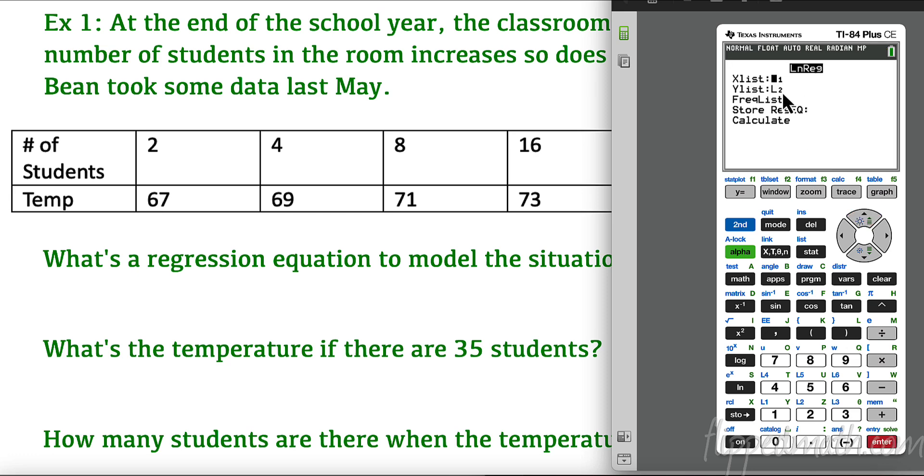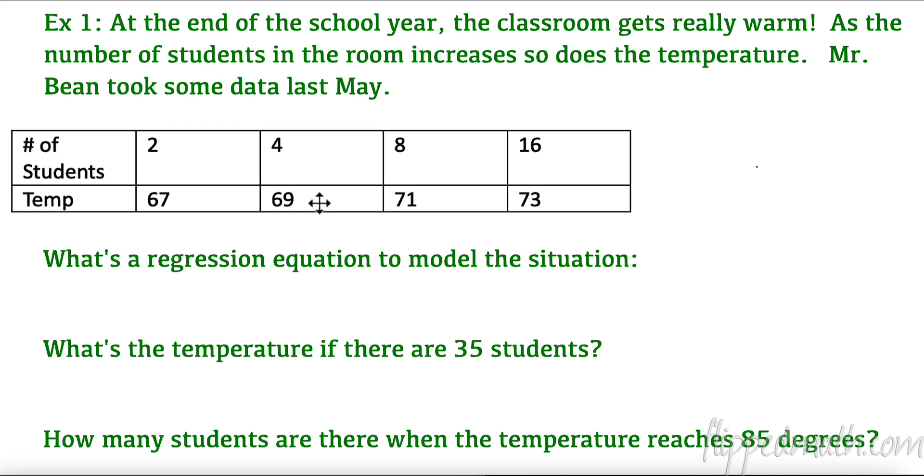I need to double check: L1 was my x's, L2 was my y's. I always like to store my regression equation. To store it I'm going to go to variables right here, I'm going to go to my y variables, it's a function, and I'm going to put it into y1 and then we're going to calculate it. Our equation is going to be a, which is 65 plus 2.8, I'm going to round that to 2.89 natural log of x. So let's write that down: f(x) = 65 + 2.89 ln(x).